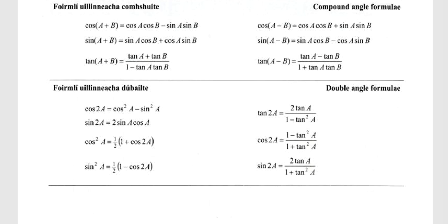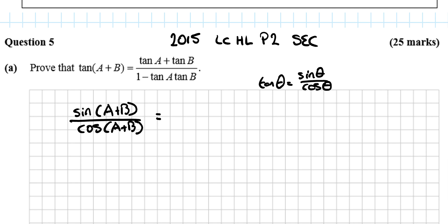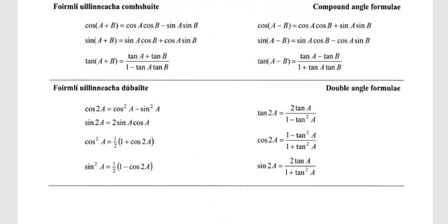Okay, so tan(A+B) is sin(A+B) over cos(A+B). Now we're looking for what's sin(A+B), so in the top left-hand corner here we have sin(A+B) and we have cos(A+B). It's simply replacing them, so the top line is going to be sin(A)cos(B) + cos(A)sin(B).